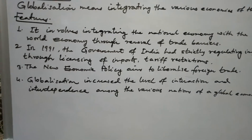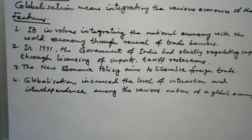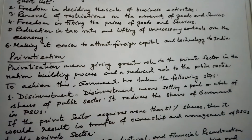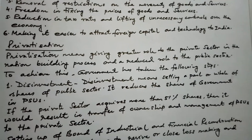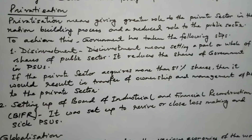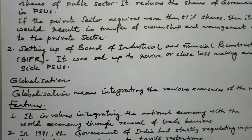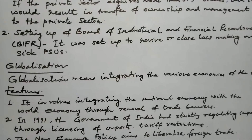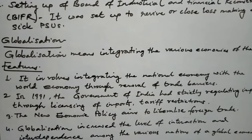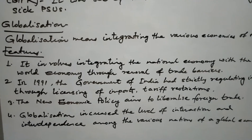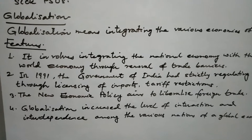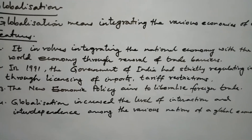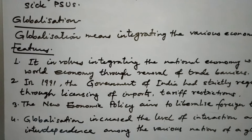To summarize, the new economic policy gave us LPG — Liberalization, Privatization, and Globalization. Liberalization means removal of trade barriers. Privatization means shares of public sector undertakings are given to private sector undertakings so private sectors can have greater say in decision-making. Globalization is the integration and interconnection of markets of the world. Globalization was made possible due to liberalization; large foreign capital investments started coming to India, and multinational companies began operating across borders.